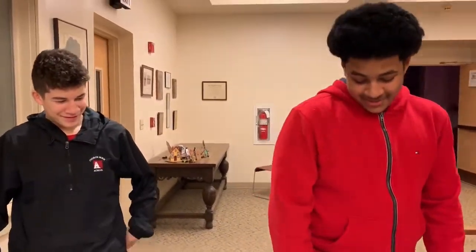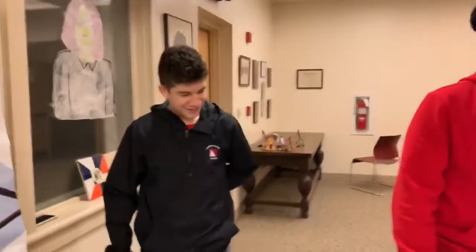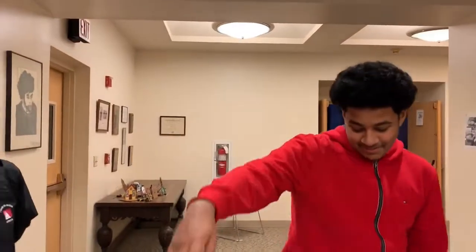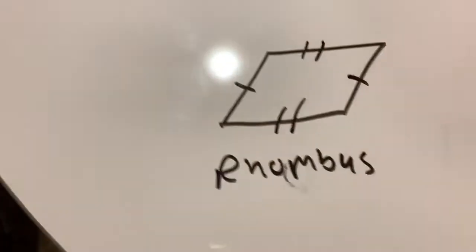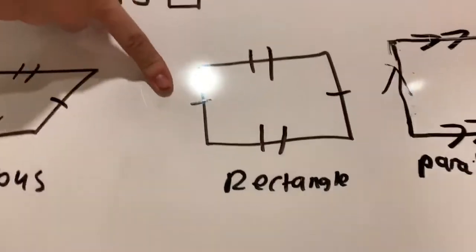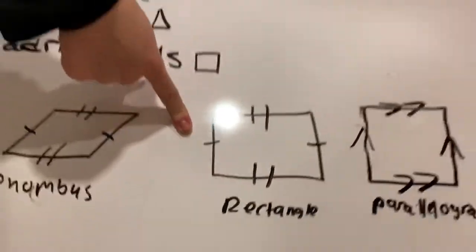These are quadrilaterals, you gotta know. So get ready to learn about the second part. We've got rhombus — kinda sideways — with two pairs of congruent lines. And a rectangle has two pairs of congruent sides.